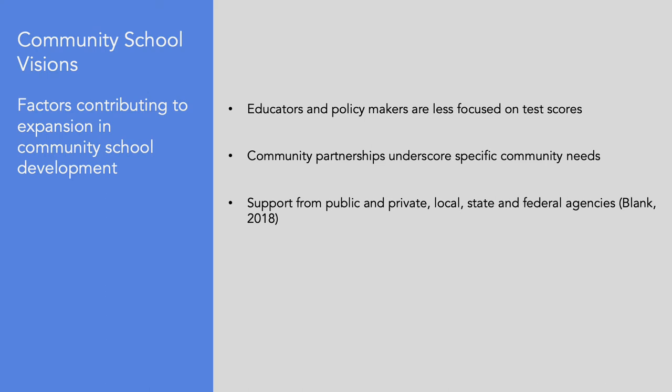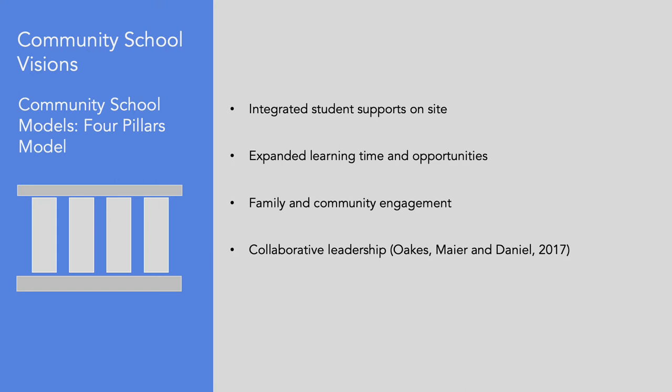The Coalition for Community Schools identifies three important factors contributing to expansion in community school development, moving from individual schools to entire districts: educators and policymakers are less focused on test scores; community partnerships underscore specific community needs; and communities receive support from public and private local, state, and federal agencies. Other considerations commonly associated with community schools are identified in the four pillars model: integrated student supports on-site, expanded learning time and opportunities, family and community engagement, and collaborative leadership — described as being self-reinforcing.